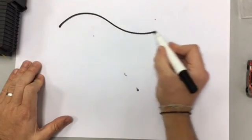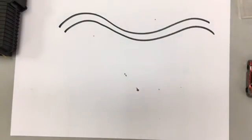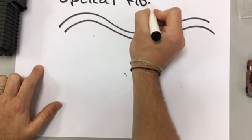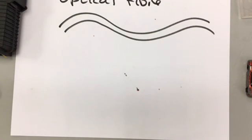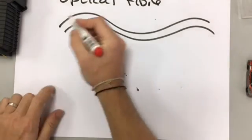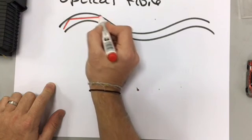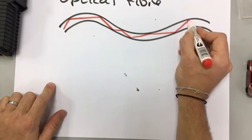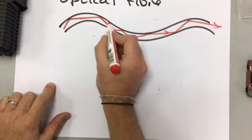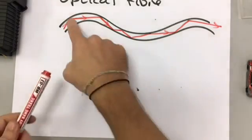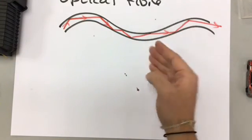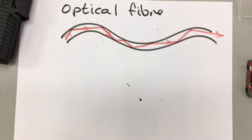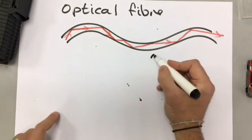We use total internal reflection for two things. The first is to help people get their internet or for communications. This is an optical fibre. If anybody has fibre optic broadband, your internet is being transmitted by light. As the light comes in and travels down the fibre, it totally internally reflects down the fibre until it comes out the other side. Remember, if you're asked to draw this in an exam, the angle of incidence must equal the angle of reflection.